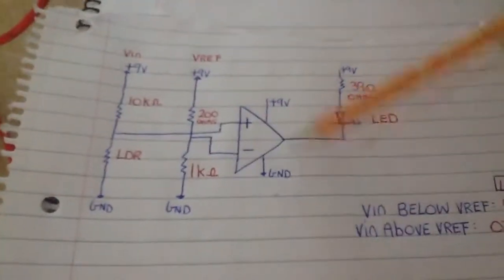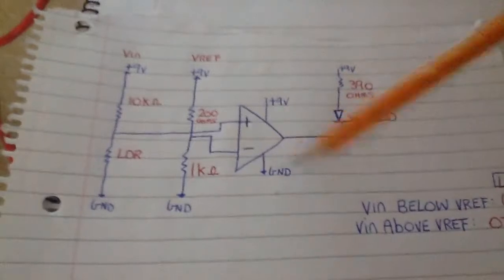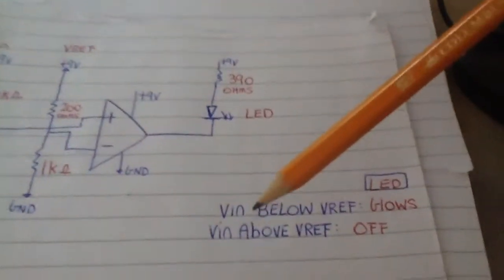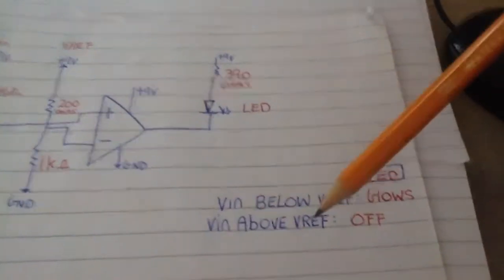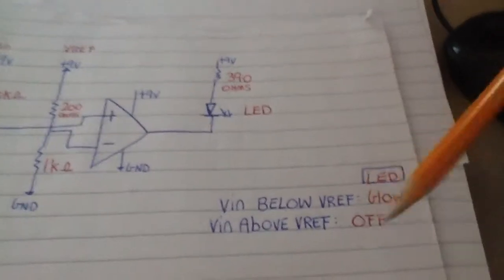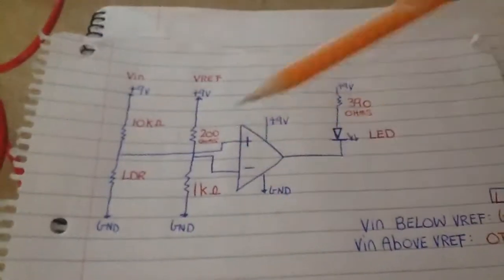The thing to notice here is that the negative voltage pin, which is pin 4, is grounded. So the way it works is that if the input voltage is below the reference voltage it glows. If the input voltage is above the reference voltage it turns off, so it has some switching capability there.